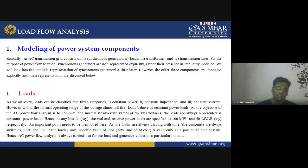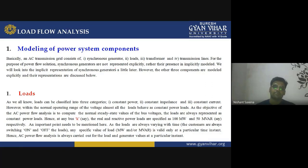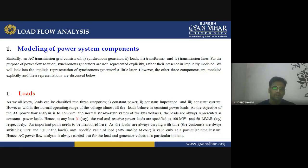If we go with the modeling of power system components, it has different components connected to the grid: synchronous generators, transformers, transmission lines, and so on. For power flow solutions, synchronous generators are not represented explicitly — rather their presence is implicit. We will look into the implicit representation of synchronous generators a little later, but let's first discuss the other three components which are modeled explicitly.